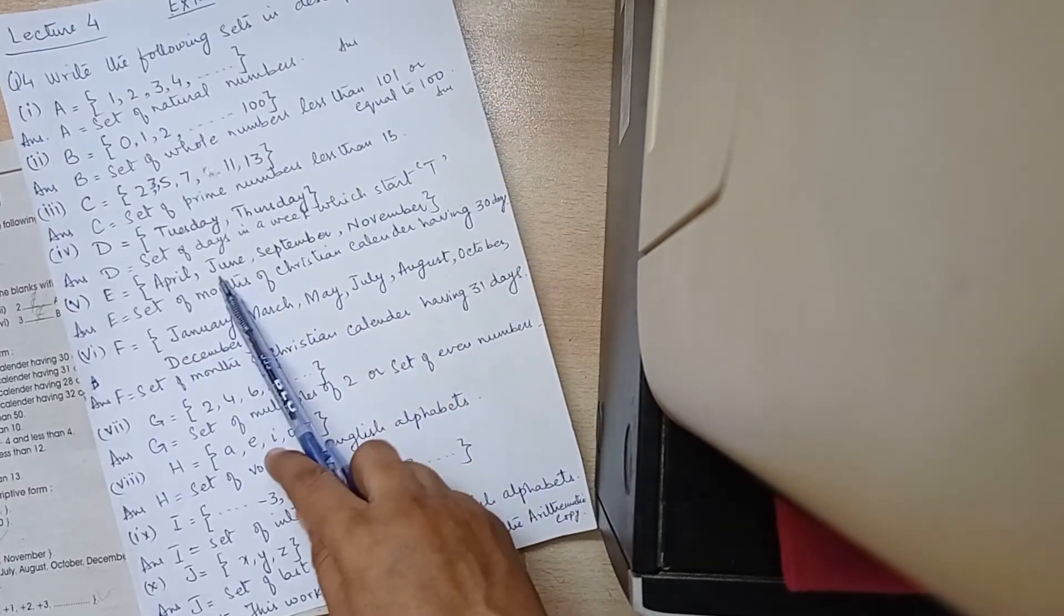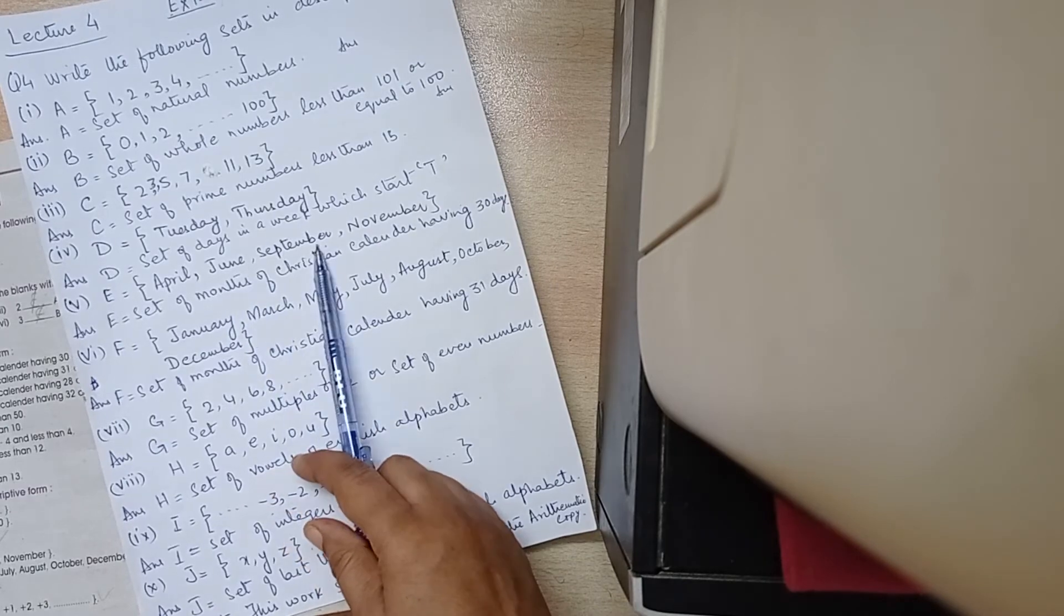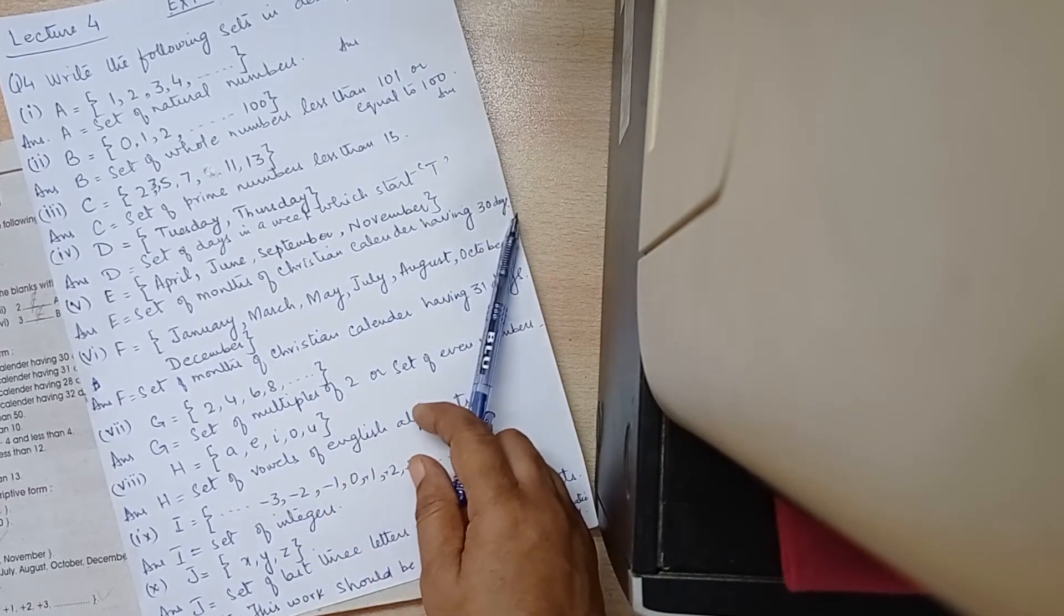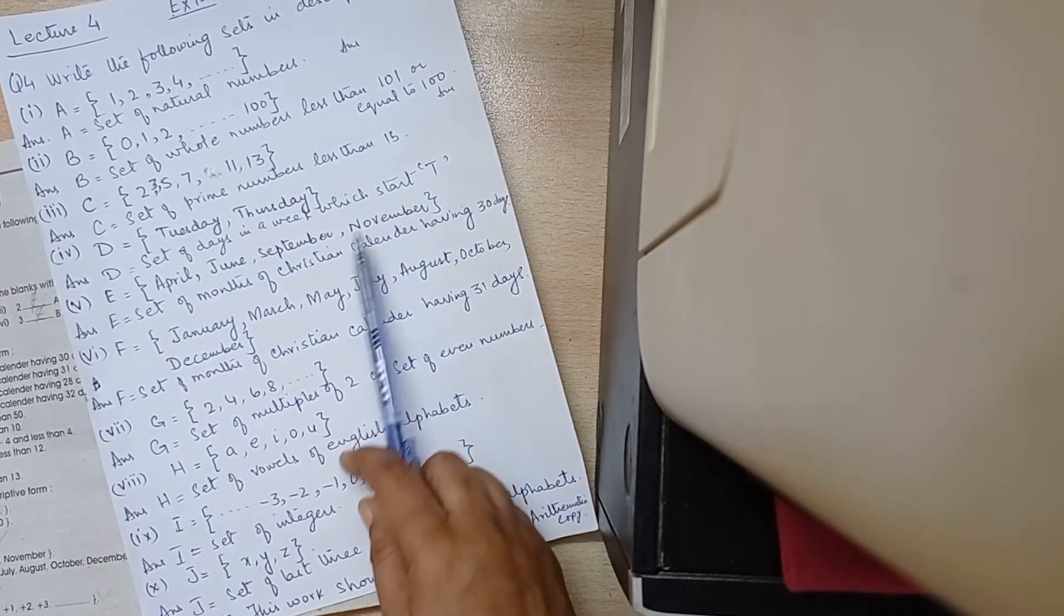E is equal to April, June, September, November. Set of months of Christian calendar having 30 days. This is 30 days. We have done this before.